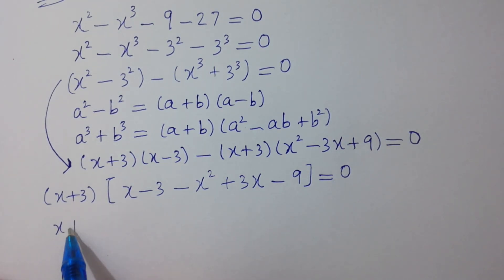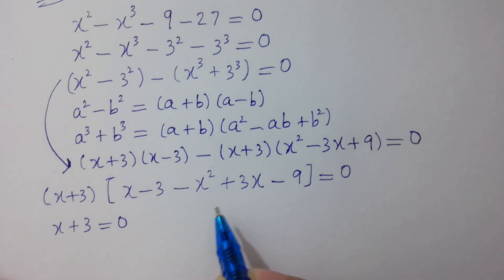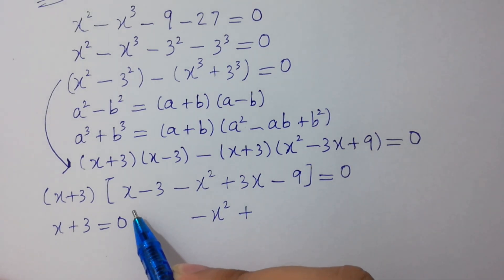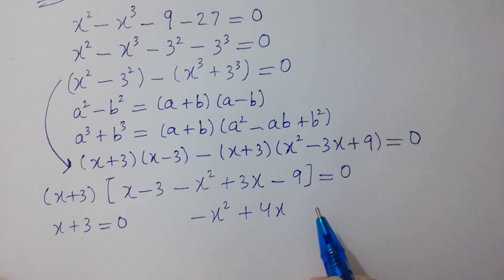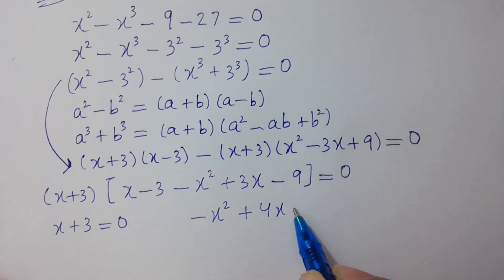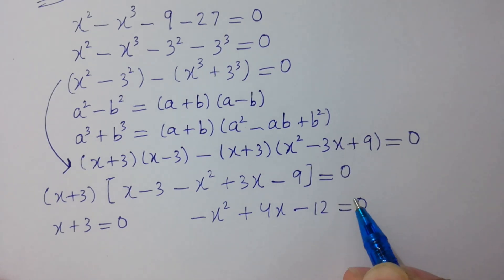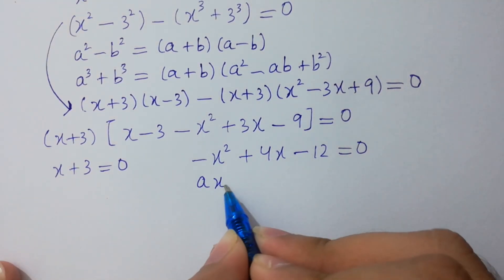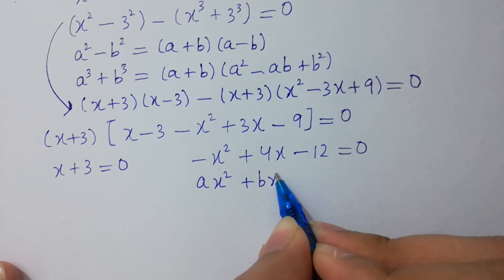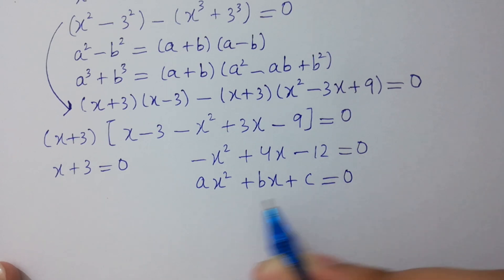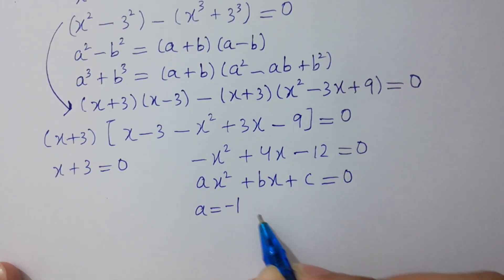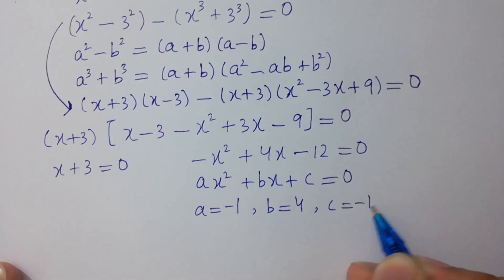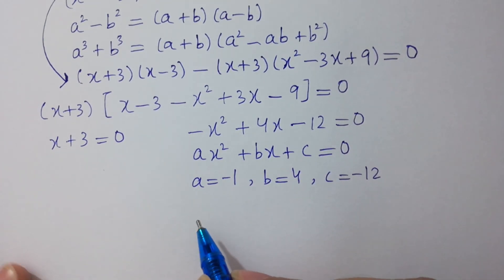So we get x plus 3 equals 0, or the quadratic: minus x squared plus 4x minus 12 equals 0. This is a quadratic equation in the form ax squared plus bx plus c equals 0, where a equals minus 1, b equals 4, and c equals minus 12. Now apply the quadratic formula.